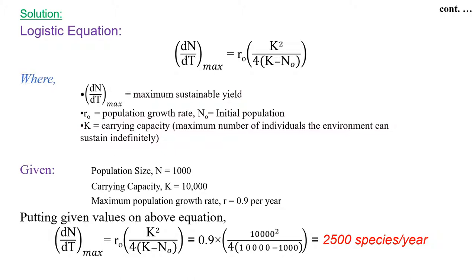Where r0 is population growth rate, N0 is initial population, and K is carrying capacity, maximum number of individuals the environment can sustain indefinitely.